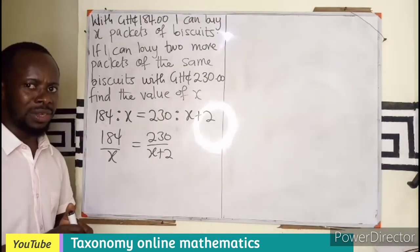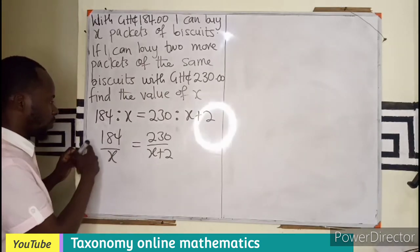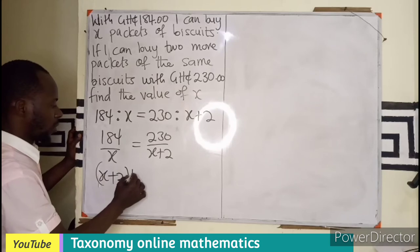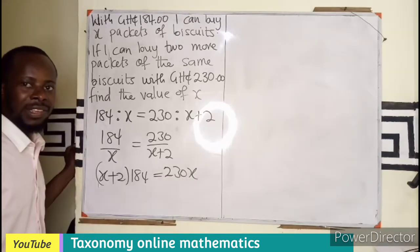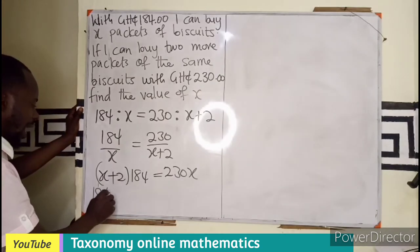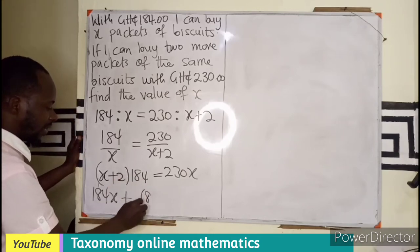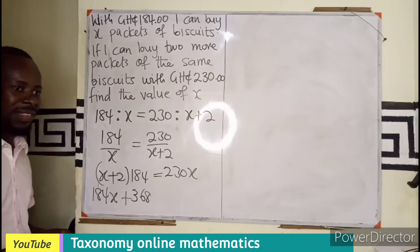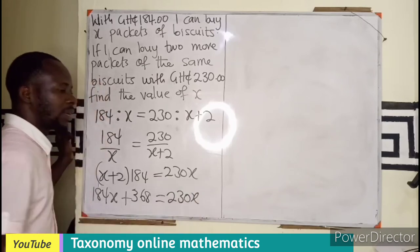Equations involving fraction. We have X plus 2 multiplying 184 equals to 230 multiplying X. I believe you can expand this bracket to get 184X plus the double of this. You double this, you get 8. You double, you get 16. Double of this, 2 plus that, we have 368. And that will equal 230X.